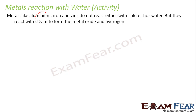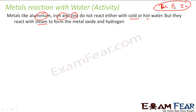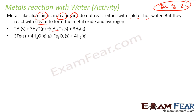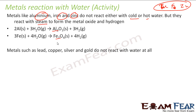The next elements — aluminium, iron, and zinc — do not react with either cold water or hot water, but they react with steam. So aluminium, iron, and zinc are in one group, though we are not yet sure which one is more reactive among them. Aluminium gives Al₂O₃ (aluminium oxide) plus hydrogen gas. Iron gives Fe₃O₄ (ferric oxide) plus hydrogen gas.